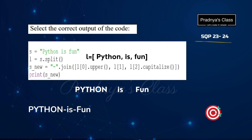In this question we need to find out the correct output. There is one string and we are applying the split function on it. By default, split function splits the string based on space, so after applying split we get a list named L with string elements. With the upper function, the string gets converted to uppercase, so the output will be the uppercase Python word. L[1] is the word 'is', so we get it as is. After that, the capitalize method converts the first alphabet to uppercase, so 'fun' becomes 'Fun'. With the join function, we join this string with a dash, so the dash comes in between these words. When we print it, the output will look like this.